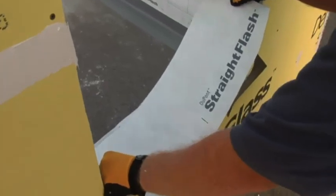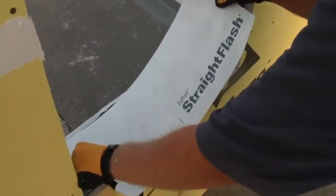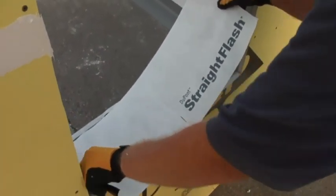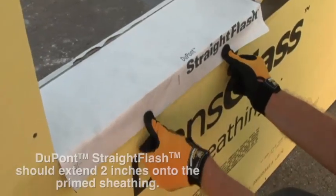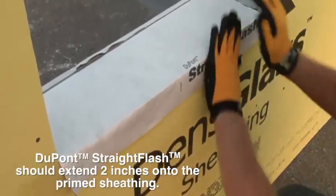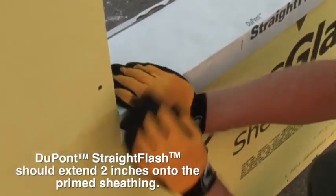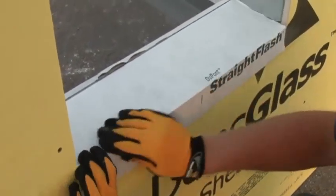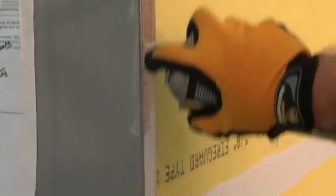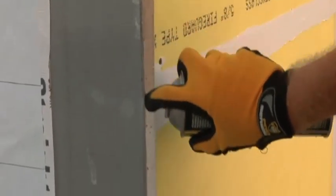DuPont recommends, as a best practice, to install a piece of straight flash at the sill of the window to act as a membrane for nail sealability or screw sealability. If you don't have any type of penetrations or fasteners going through the sill because of a sub-sill, just fasten it to the window.